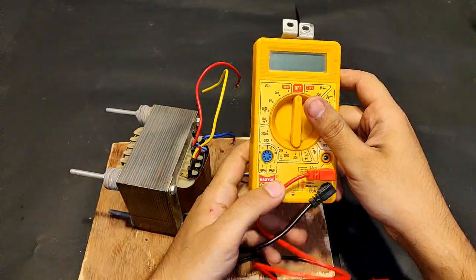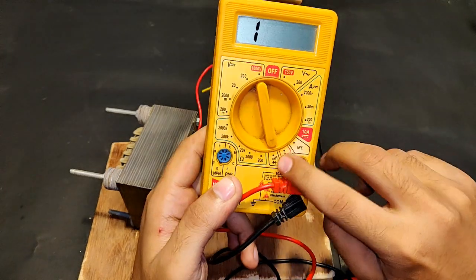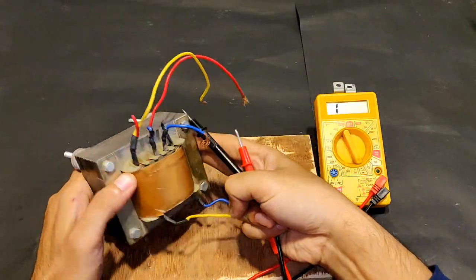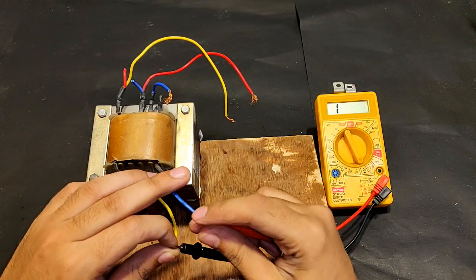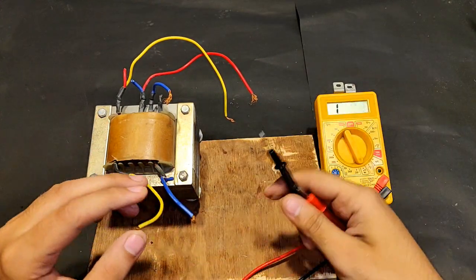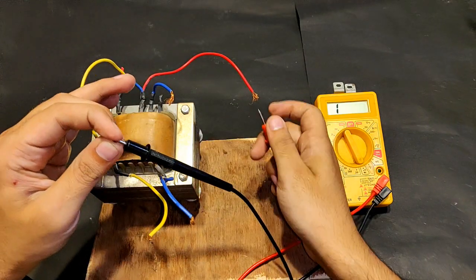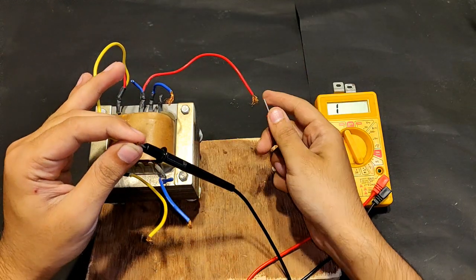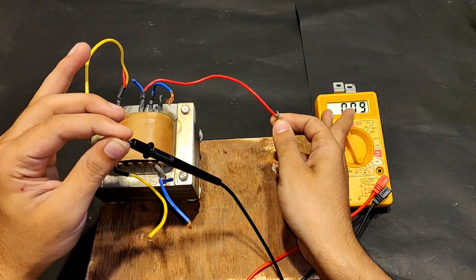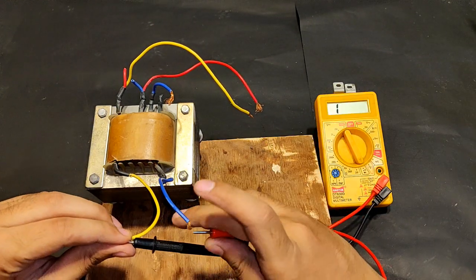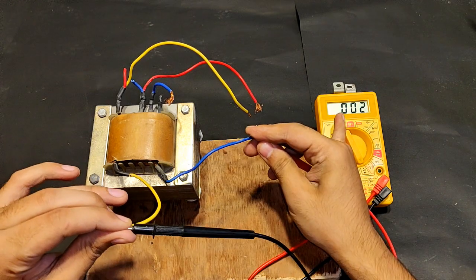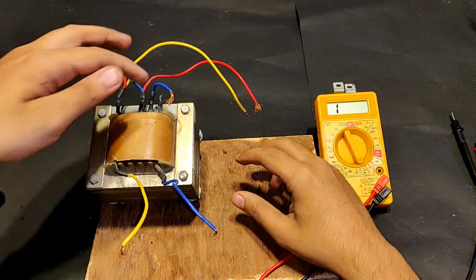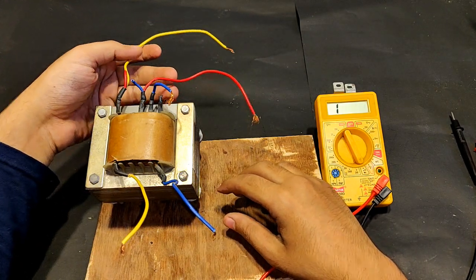The multimeter is pointed towards the continuity checking mode. First, the low voltage secondary winding high current side. Yeah, it's working. Now comes the high voltage side. The resistance is somewhere around 9 ohms on the high voltage side and only 2 ohms on the high current side. This confirms this is the high current side and this is the high voltage low current side.